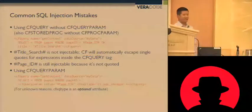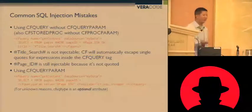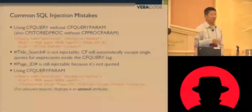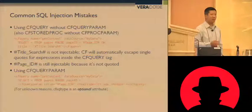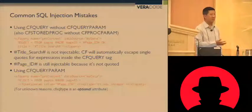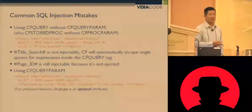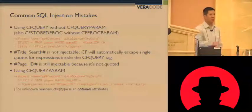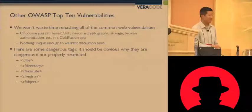The pen testing tip to take out of this is: whenever you're looking at a ColdFusion page and looking for a SQL injection point, always look for a numeric parameter. Because if it's a quoted string parameter, you're not going to be able to inject into it because of the automatic escape single quotes that ColdFusion does. So look for the numeric parameters — those are almost always going to be injectable, unless the developer puts quotes around it in the query, which they usually don't do.